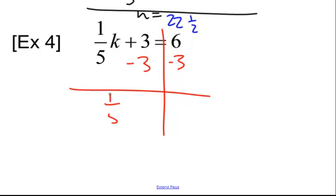So we end up with 1 fifth k equals 3. Now, since it's 1 fifth times k, we need to divide by 1 fifth on both sides. And since we're dividing by 1 fifth, we need to make this into a fraction. So that's 3 over 1.